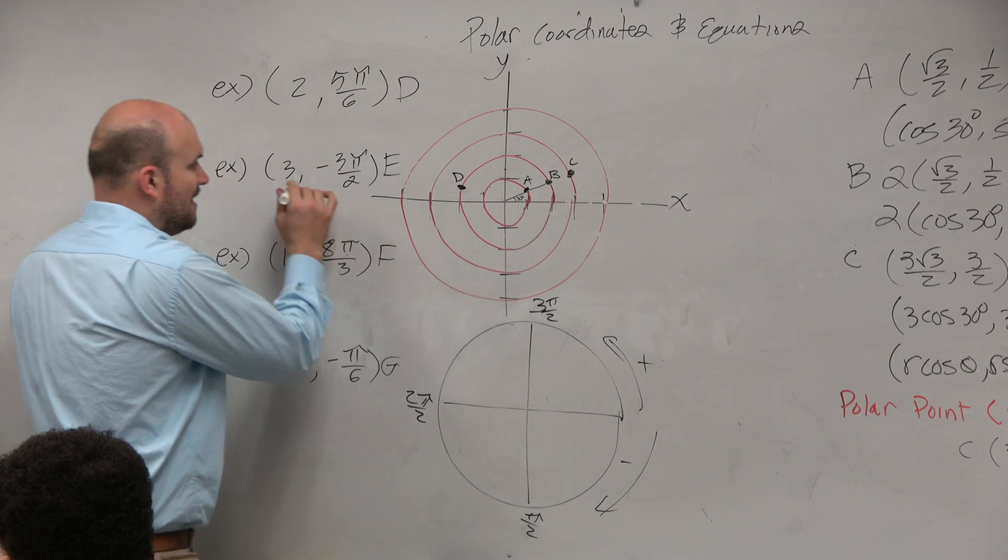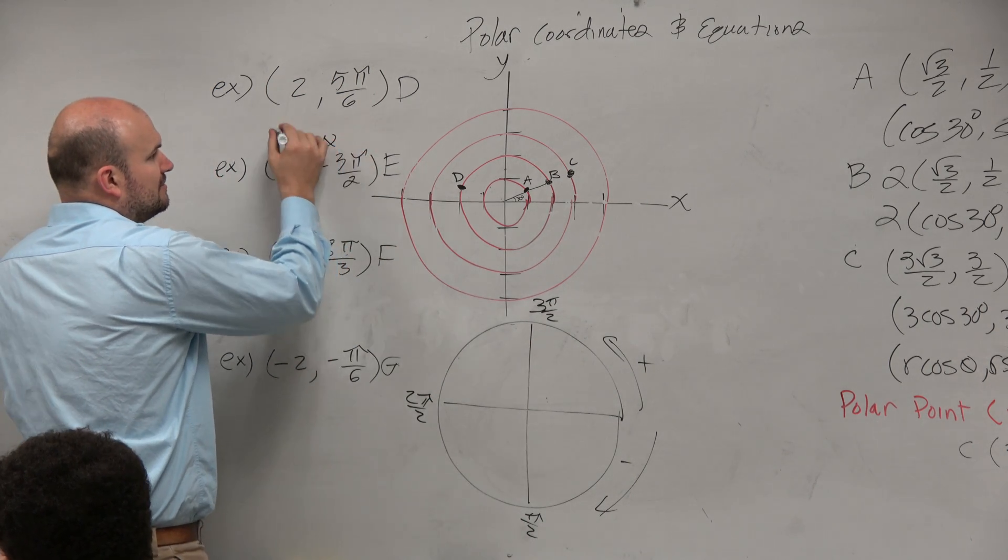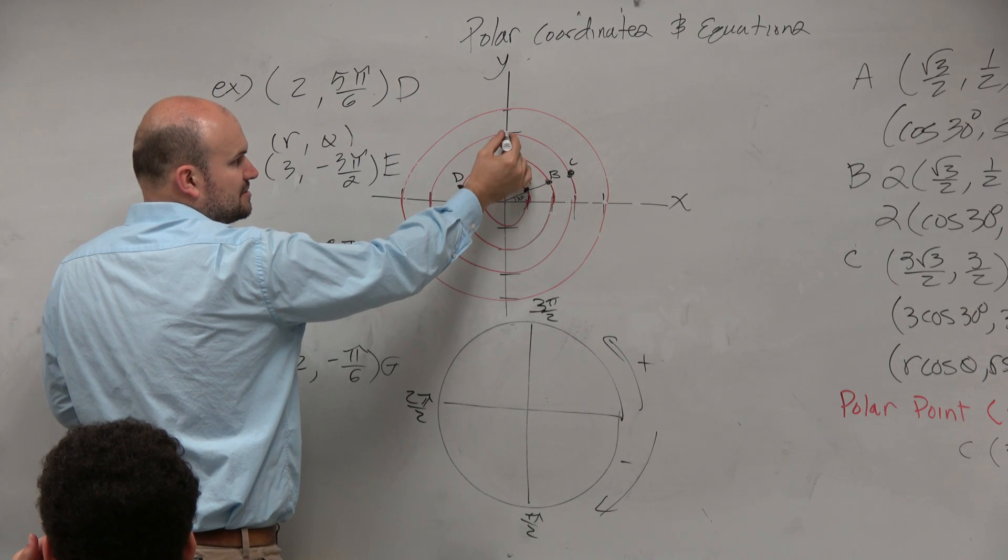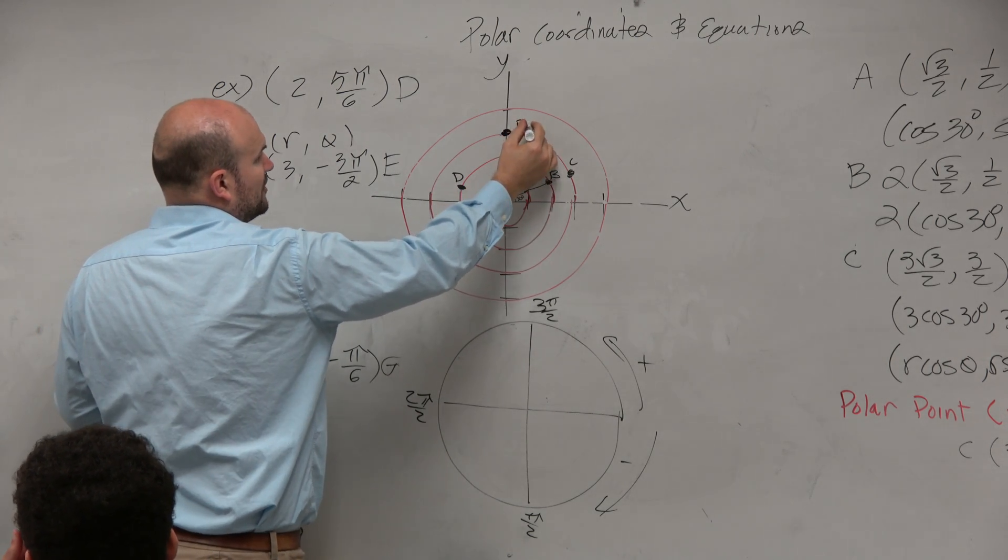So we're over here. And then remember, r comma θ. r is your radius, so we'll go up three units. And that is point b.